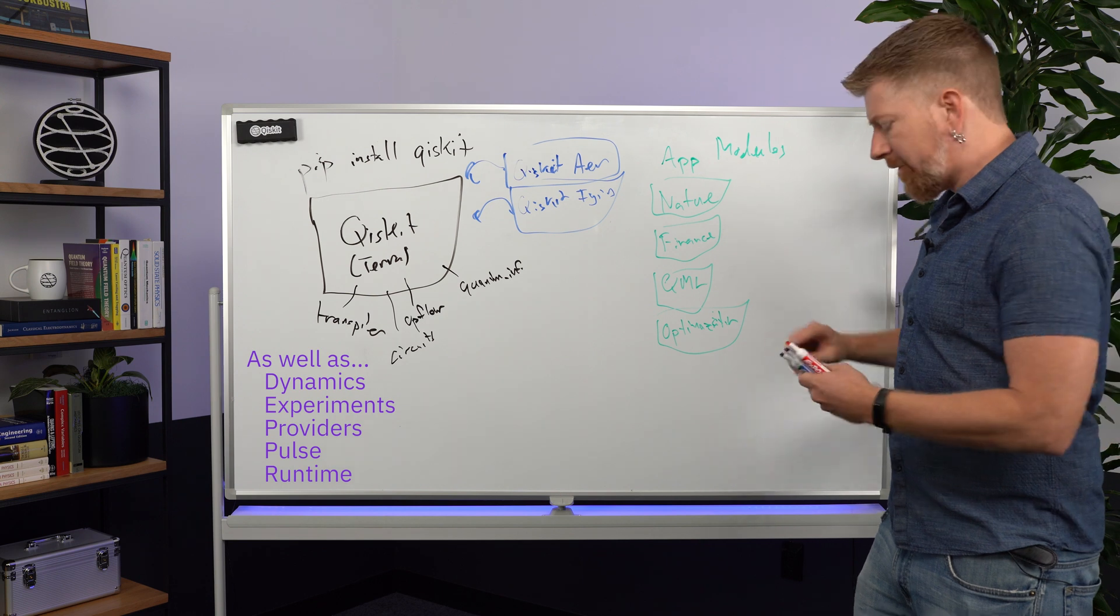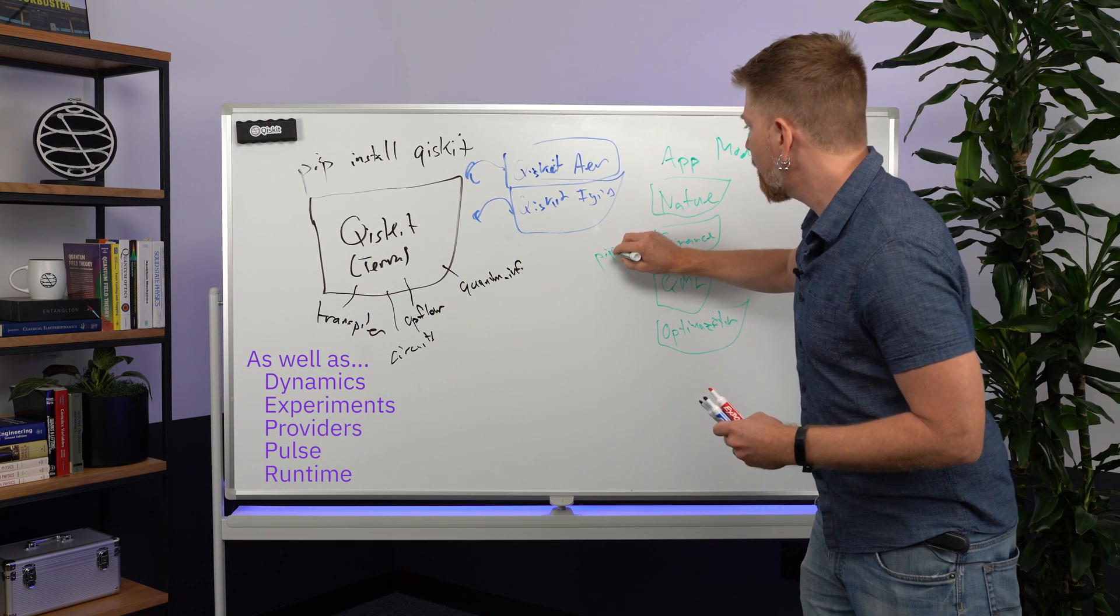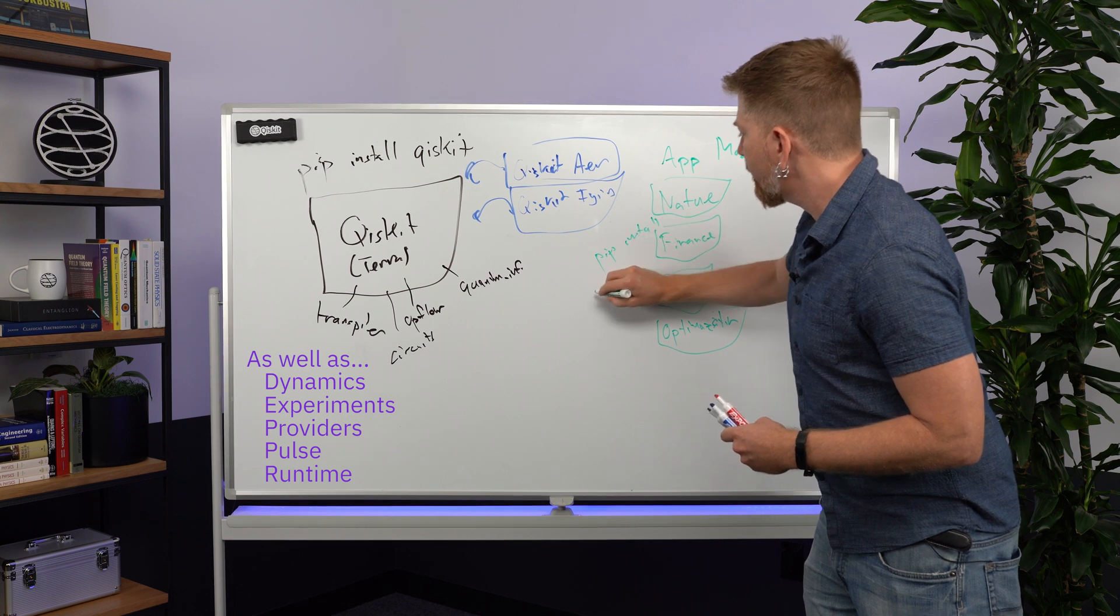So these are all installed separately. For example, for both of these you could do pip install each one of these, say Qiskit